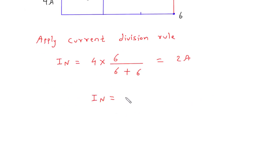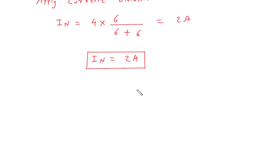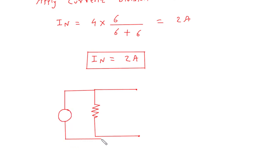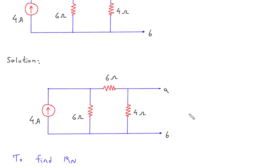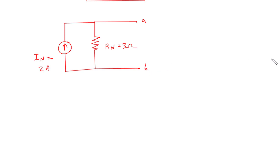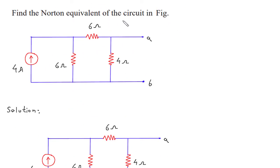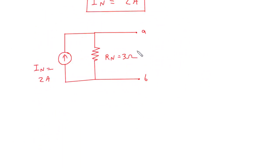Therefore In, which is Norton's current, is equal to 2 ampere. Now we have the value of In and Rn, from this we can draw Norton's equivalent circuit. Norton's equivalent will be a resistor in parallel with a current source. This current source In is equal to 2 ampere and Rn is equal to 3 ohm, with terminals A and B.